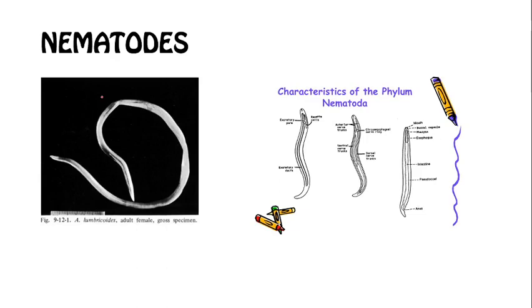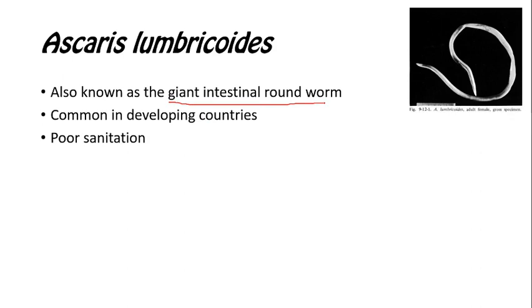Ascaris lumbricoides belongs to a group of worms called nematodes, and nematodes are commonly known as roundworms and constitute the phylum Nematoda. Ascaris lumbricoides, also known as the giant intestinal roundworm, is just one of over 15,000 species of roundworms. But the reason why this is so closely studied is because of how commonplace they are in developing countries and the detrimental effects they may cause to our health.